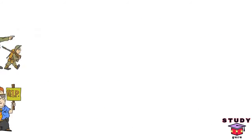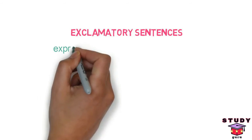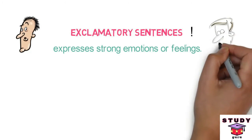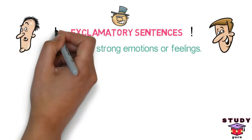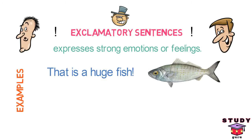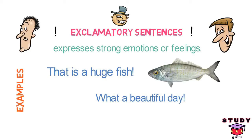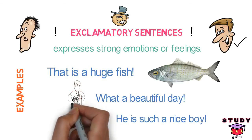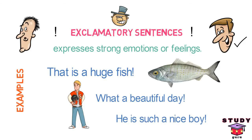Let's look into the final type of sentence — exclamatory sentences. Exclamatory sentences are used to express strong emotions or feelings. They end with an exclamation mark. When you are surprised, happy, or angry, you use exclamation to express your emotion. For example, 'That is a huge fish!' — expressing surprise at the size of the fish. 'What a beautiful day!' — expressing happiness after having a nice day. 'What a nice boy!' — expressing satisfaction after meeting a very nice boy. So, exclamatory sentences are used in case of strong emotions or feelings.